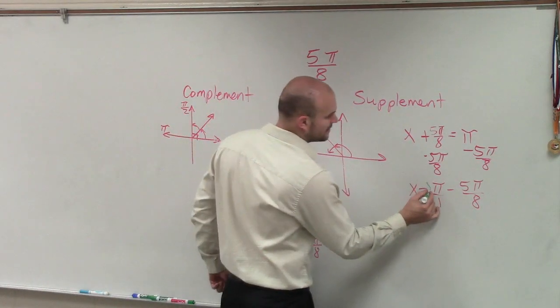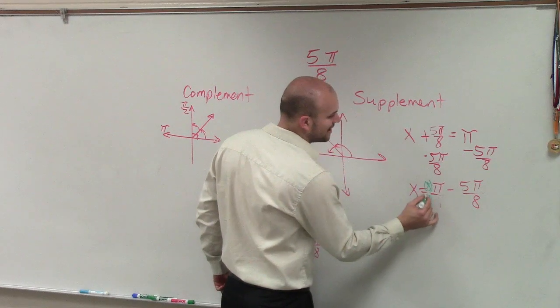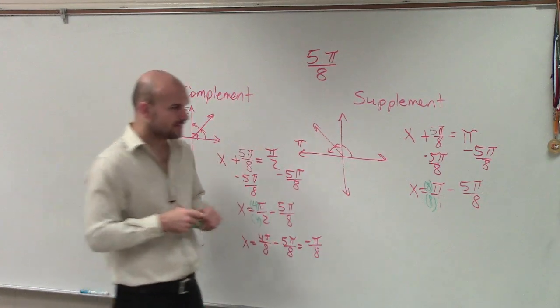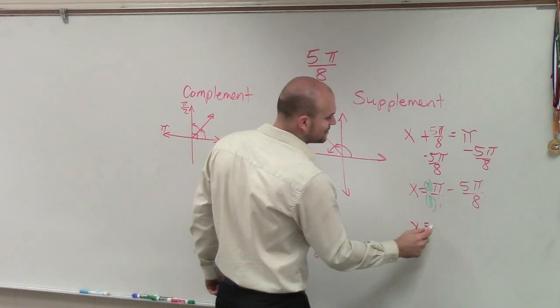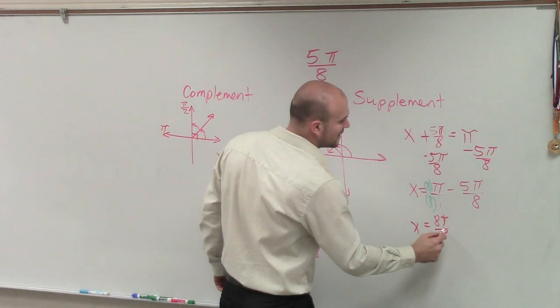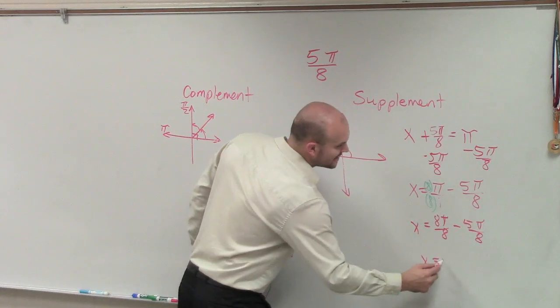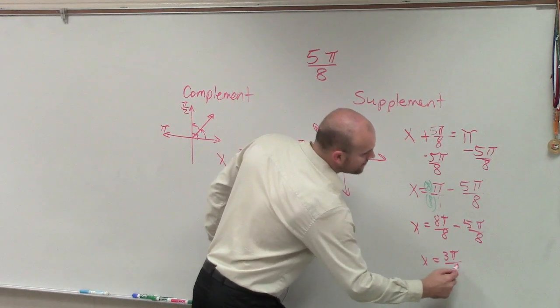So I'll put this over 1 and then multiply by 8. So now I have x equals 8π/8 minus 5π/8. So x equals 3π/8.